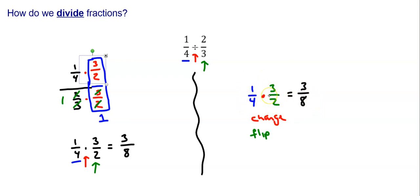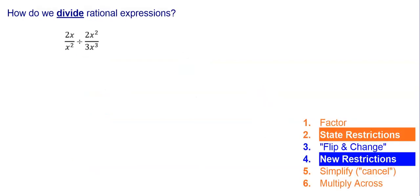So to divide fractions, you simply change it to multiply and flip the second fraction to make it a much simpler problem — namely, we can multiply rational expressions like we did in the last video. Dividing rational expressions is very much like multiplying rational expressions, except for two new steps: flip the second expression, change it to multiplying, and then state some new restrictions. Let's look at a couple examples.